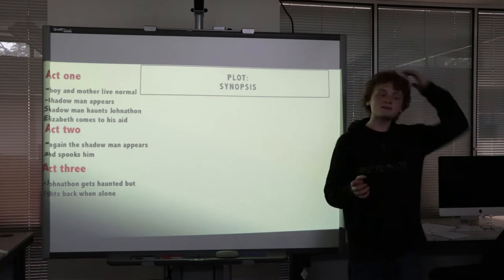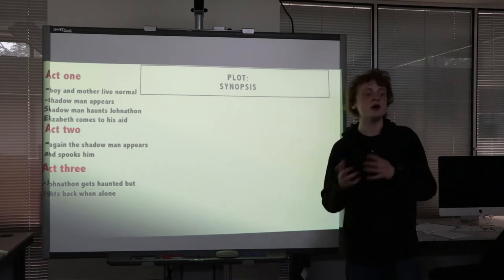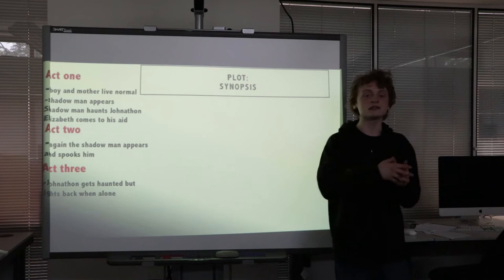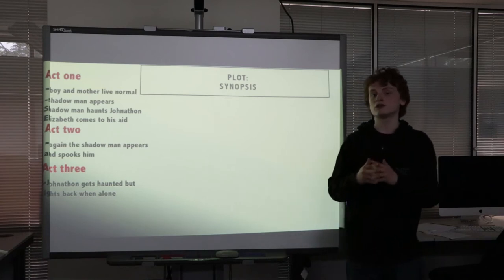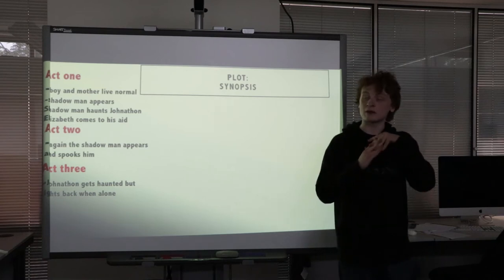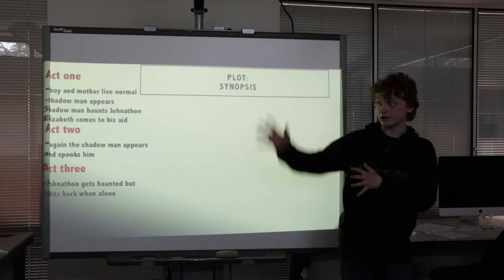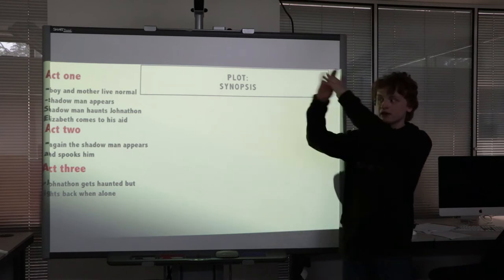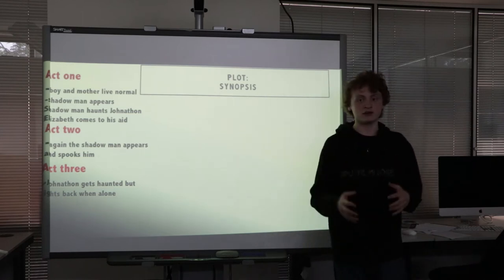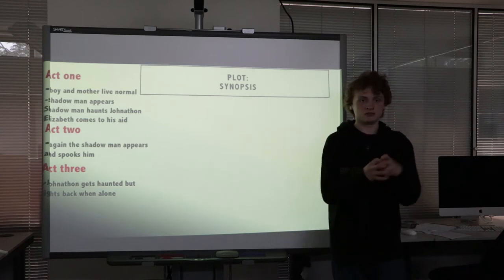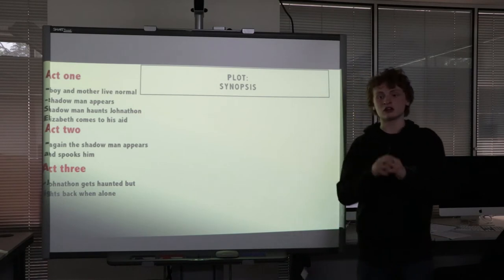Act 3: Elizabeth has to leave Jonathan as she has a family emergency — her sister's in hospital. Jonathan is left alone for two hours. This is when the shadow man fully comes out and we see him in the flesh. This shadowy figure tries to get Jonathan; they have a tussle, and it ends with Jonathan defeating the shadow man.